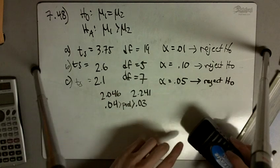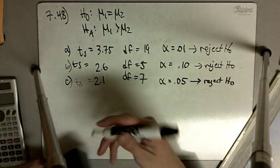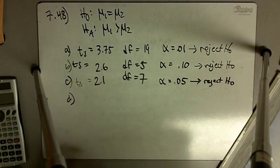So whenever our p-value is smaller than our significance level, smaller than alpha, we reject the null hypothesis.